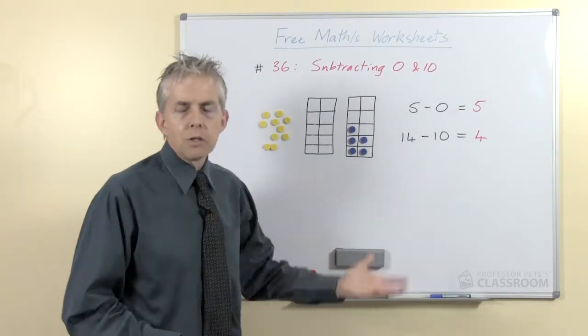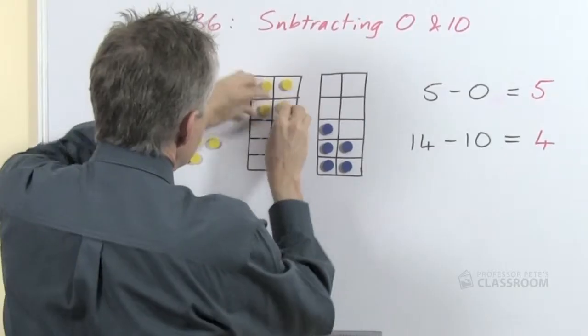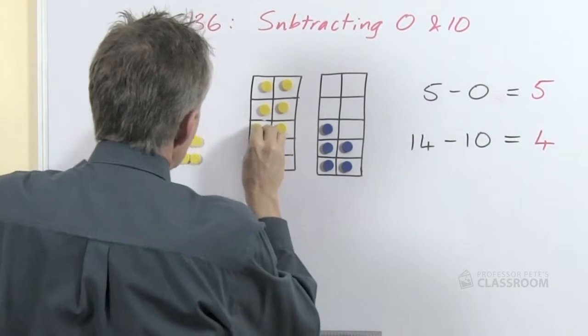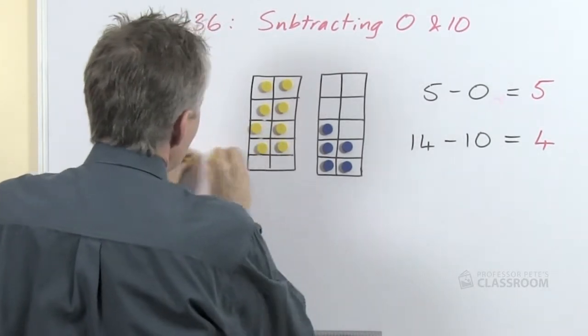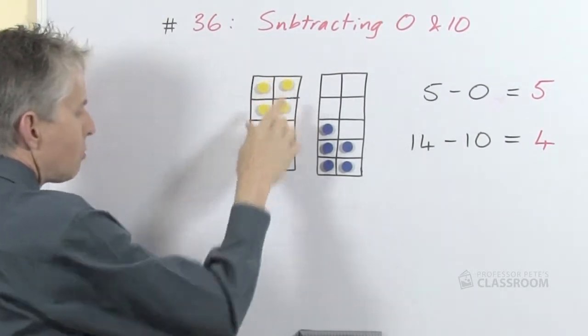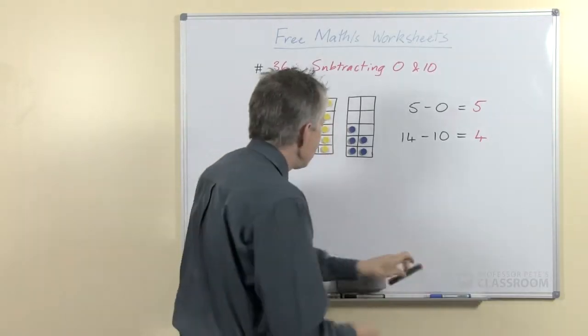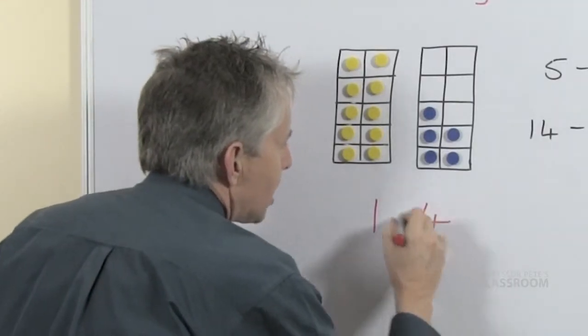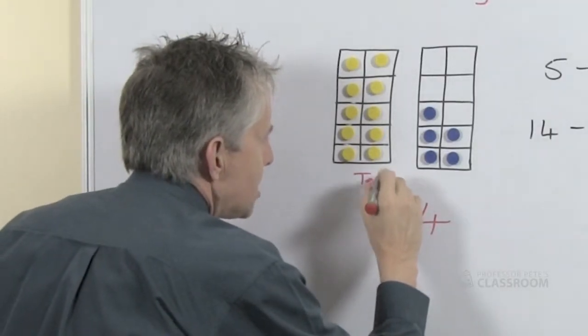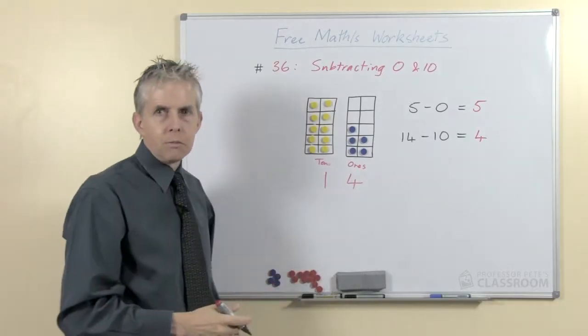We'll move on to subtracting ten. Again we can use ten frames. Of course this time we'll need a double ten frame or two ten frames together and we're going to need a number that has ten in one of the frames. Now I would make sure that that ten is on the left hand side, so that when we write this down as a number, we can see here we have one ten and four ones and that's how we write the number fourteen.